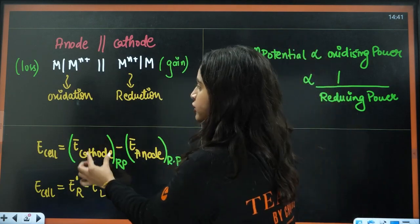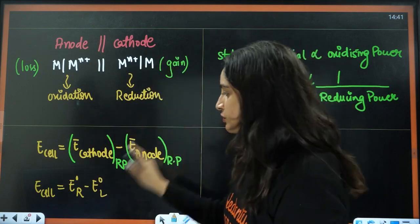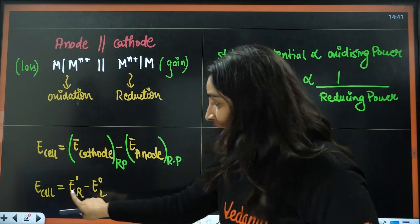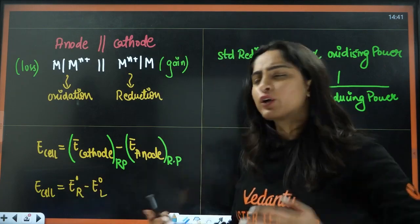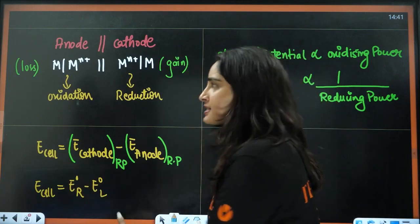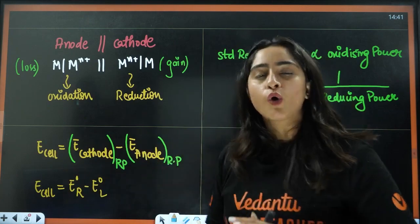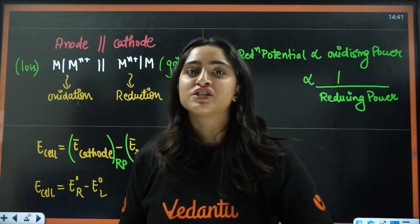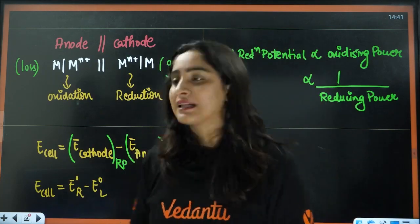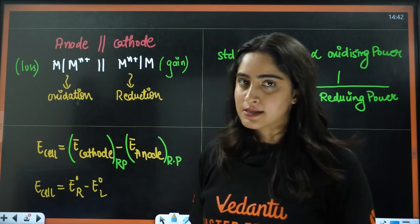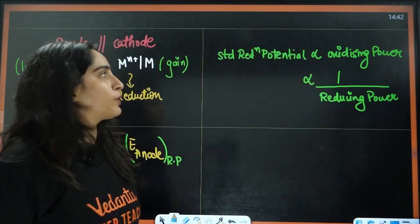Cathode is on the right side, so E cell equals E right side minus E left side. You can also write it as E cathode minus E anode. But always take the reduction potential — never take oxidation potential here. Always take the reduction potential in both cases. Next, we have how standard reduction potential relates to other quantities.